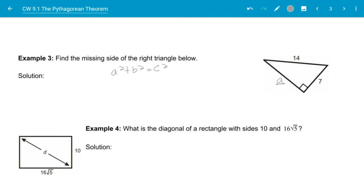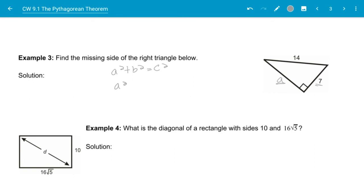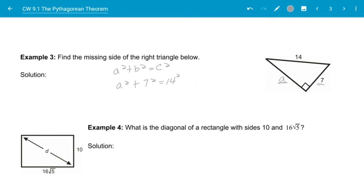In this instance, A and 7 are my legs. 14 is my hypotenuse, so I can put that in. A squared plus 7 squared is equal to 14 squared. Kind of looks like 142 there. We'll put it up a little bit higher.